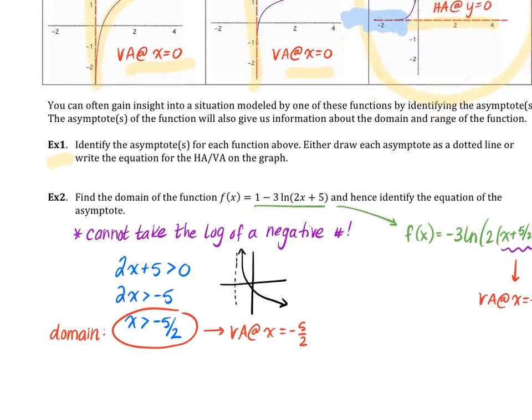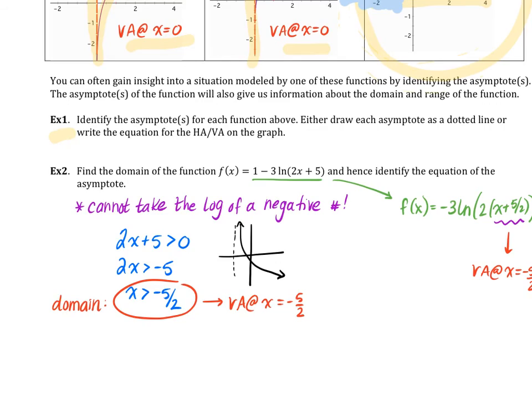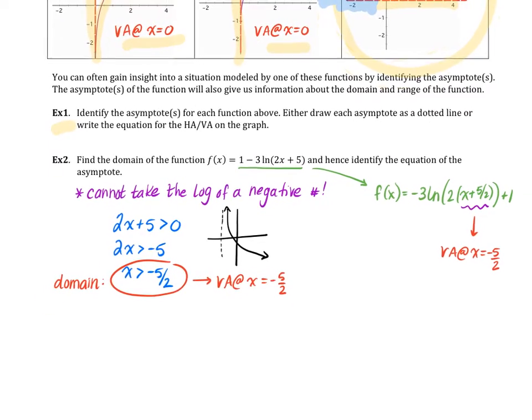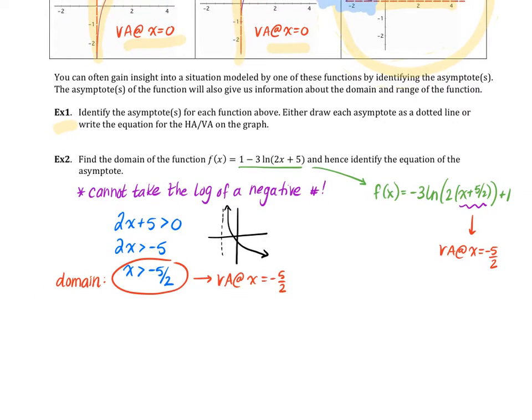Example two. I'm going to take you through the answer key that's already provided. Example two says find the domain of the function f(x) = 1 - 3ln(2x + 5) and hence identify the equation of the asymptote. There are two different ways you could do this question.